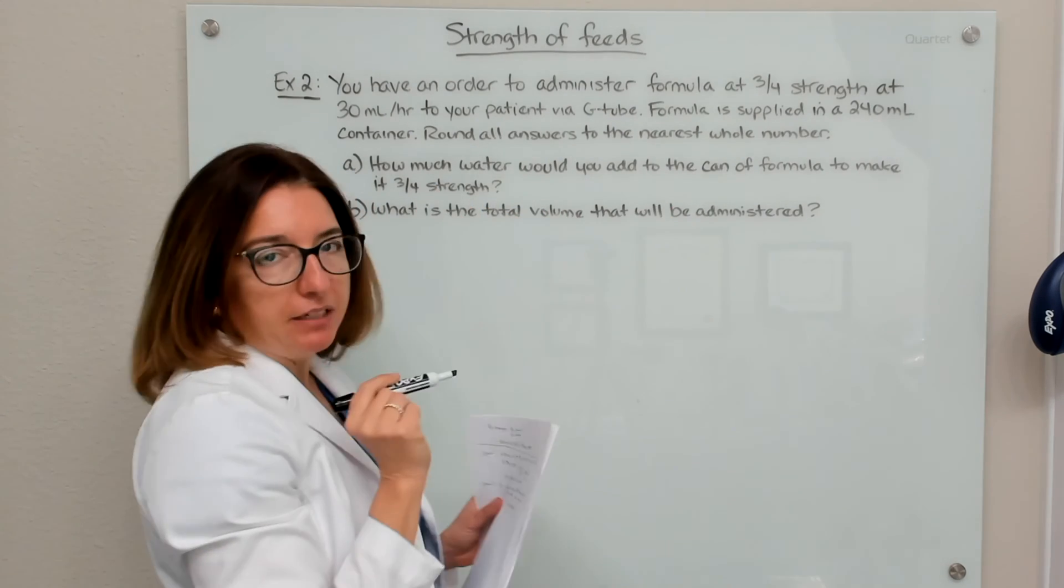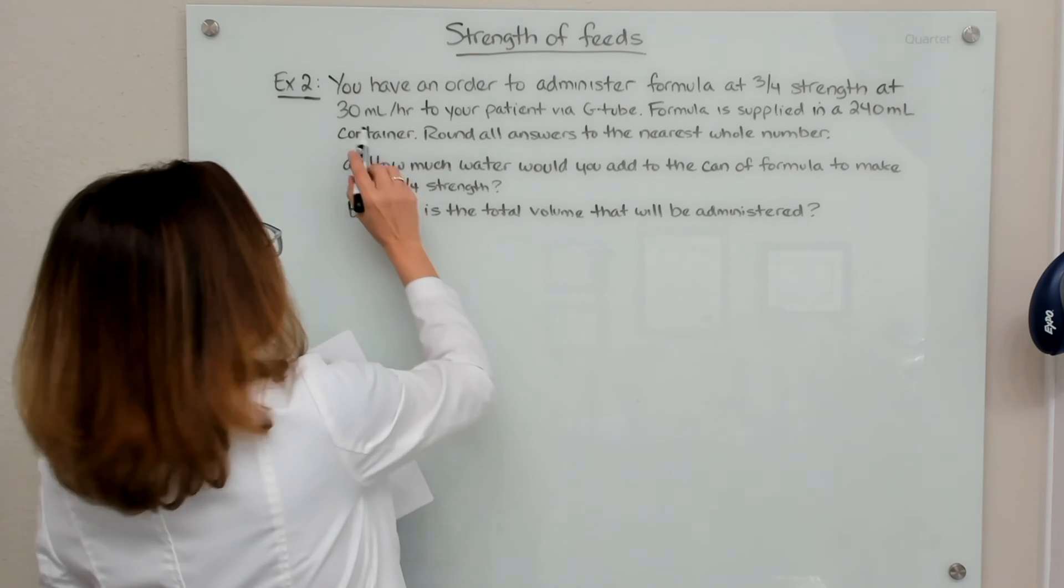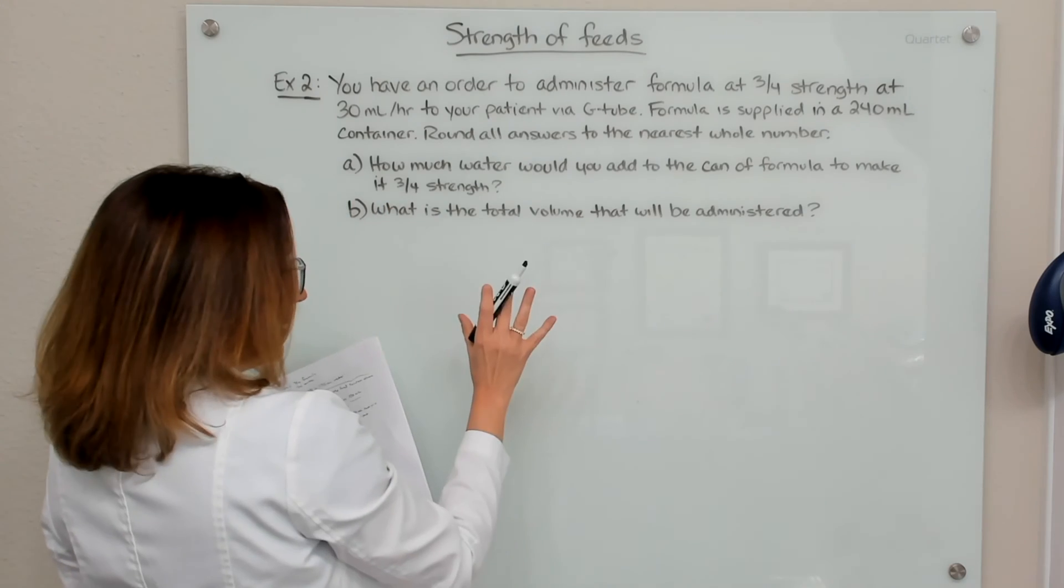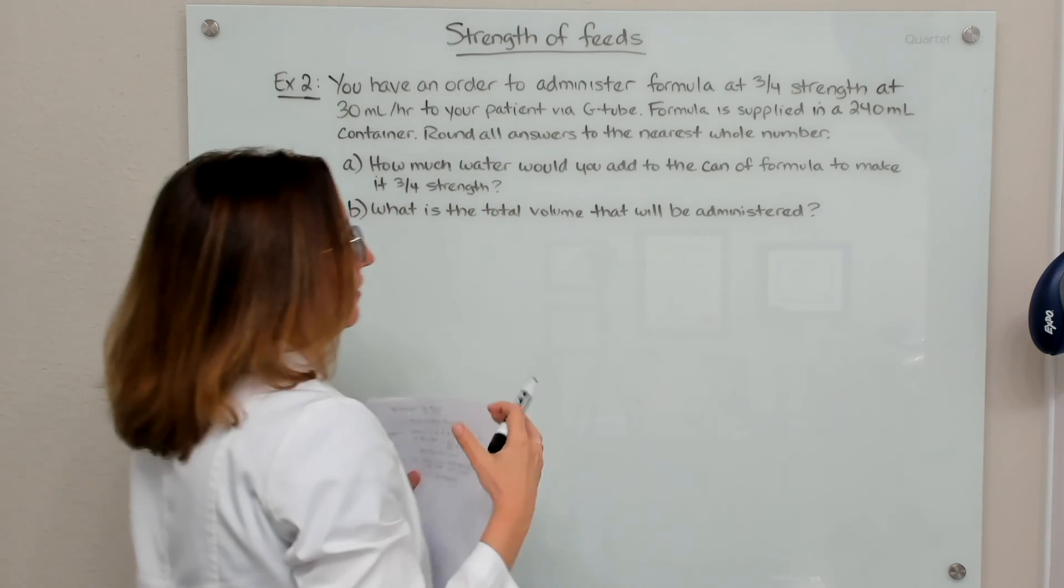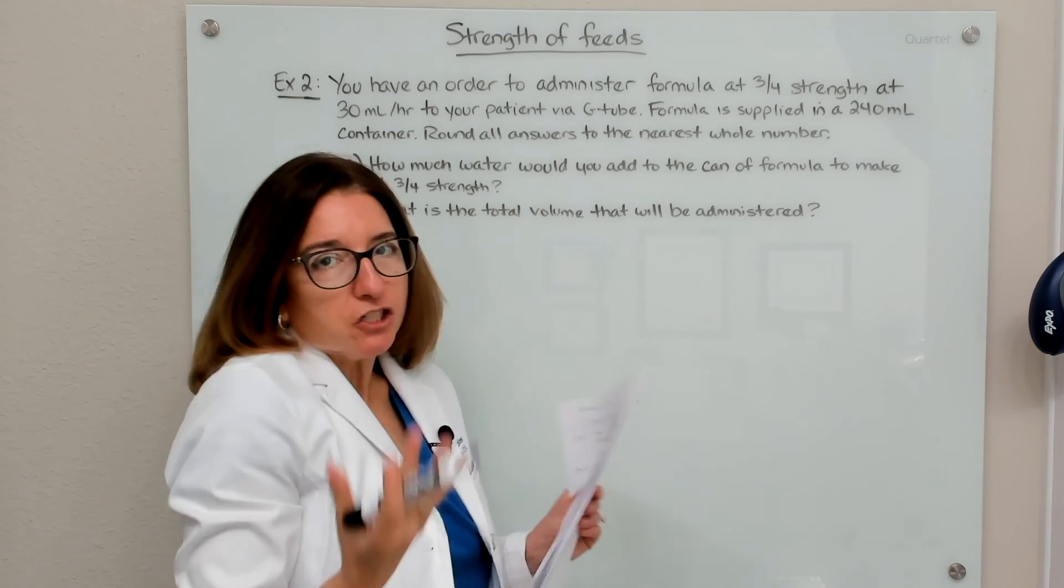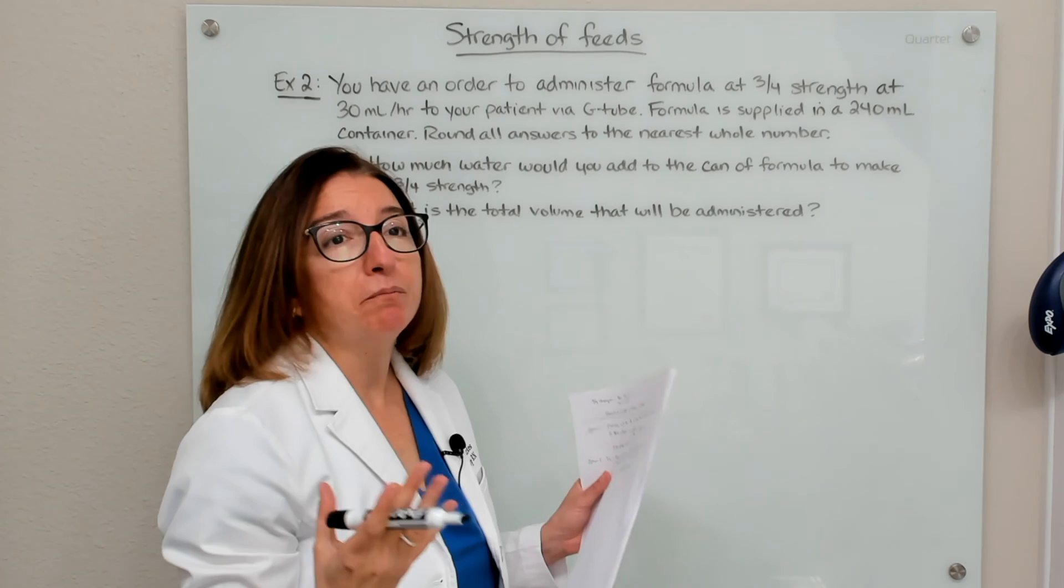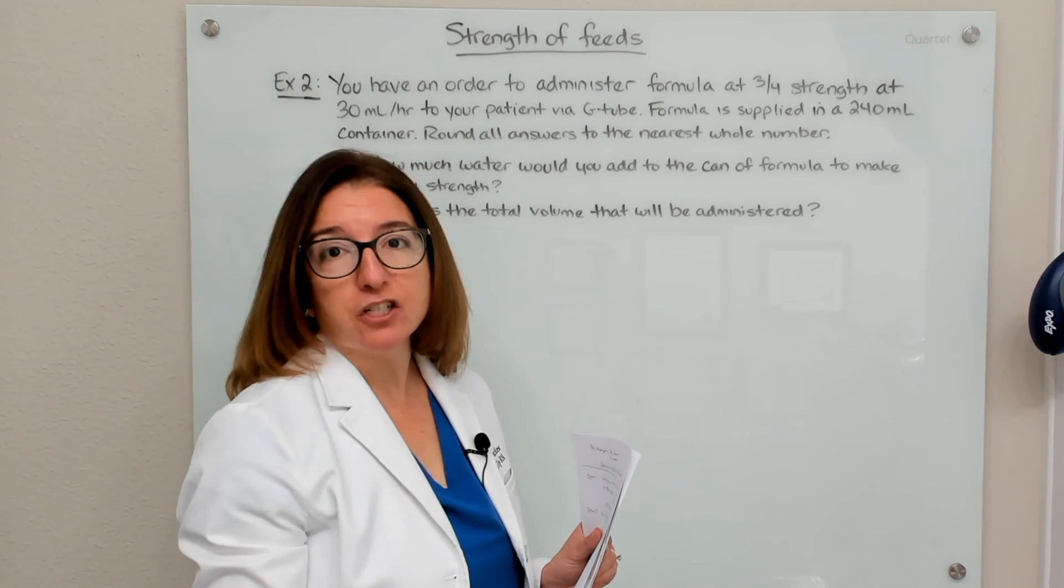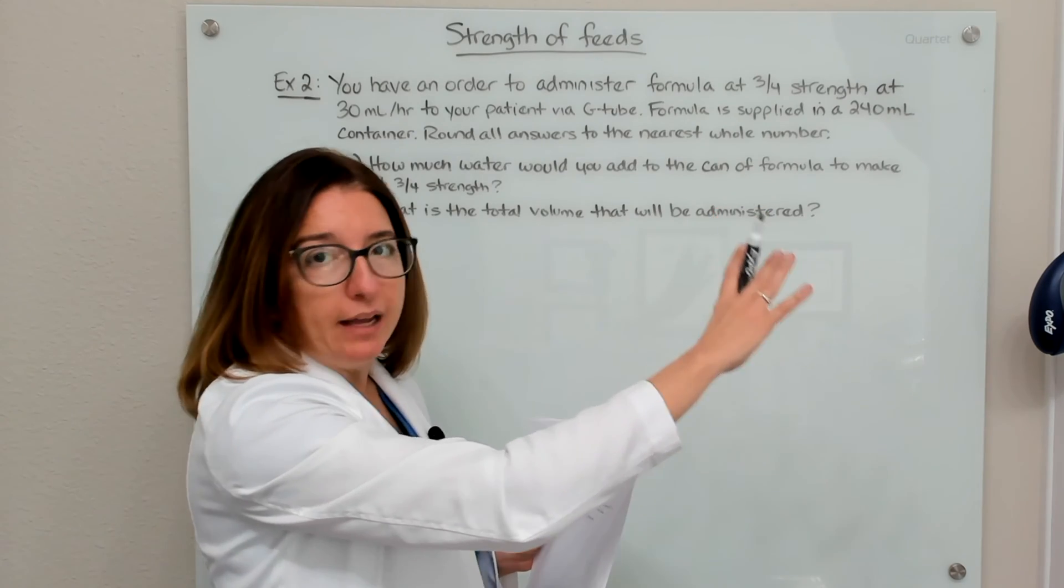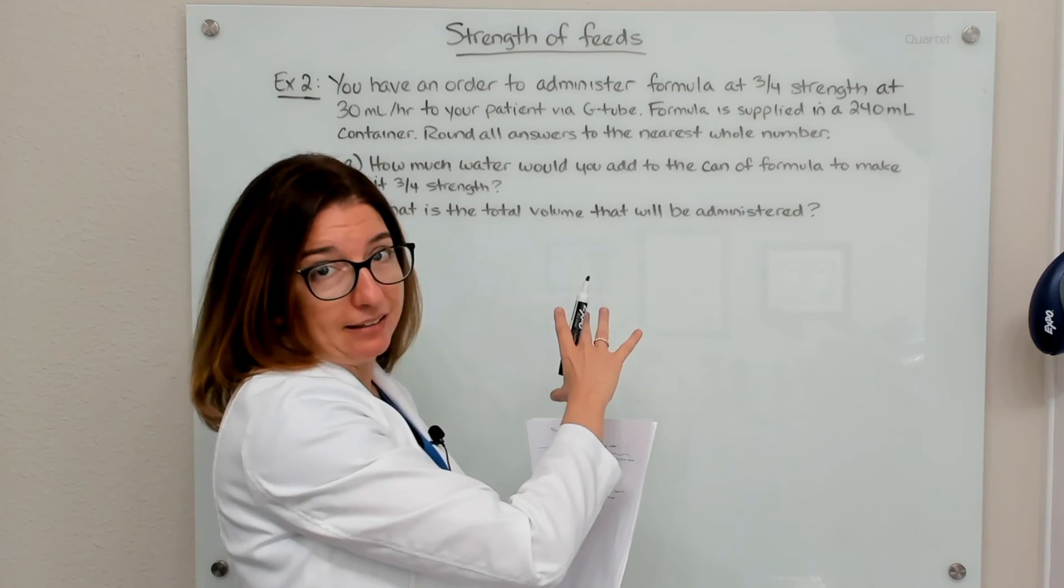So before I read out the questions here, I want to give you guys a little spoiler alert, which is this 30 ml per hour is irrelevant for the questions being asked. And you'll see that happen a lot with dosage calculation problems. They'll throw a bunch of numbers at you, and some of those numbers won't even be relevant for the questions being asked. So definitely don't freak out at all the numbers being thrown your way.